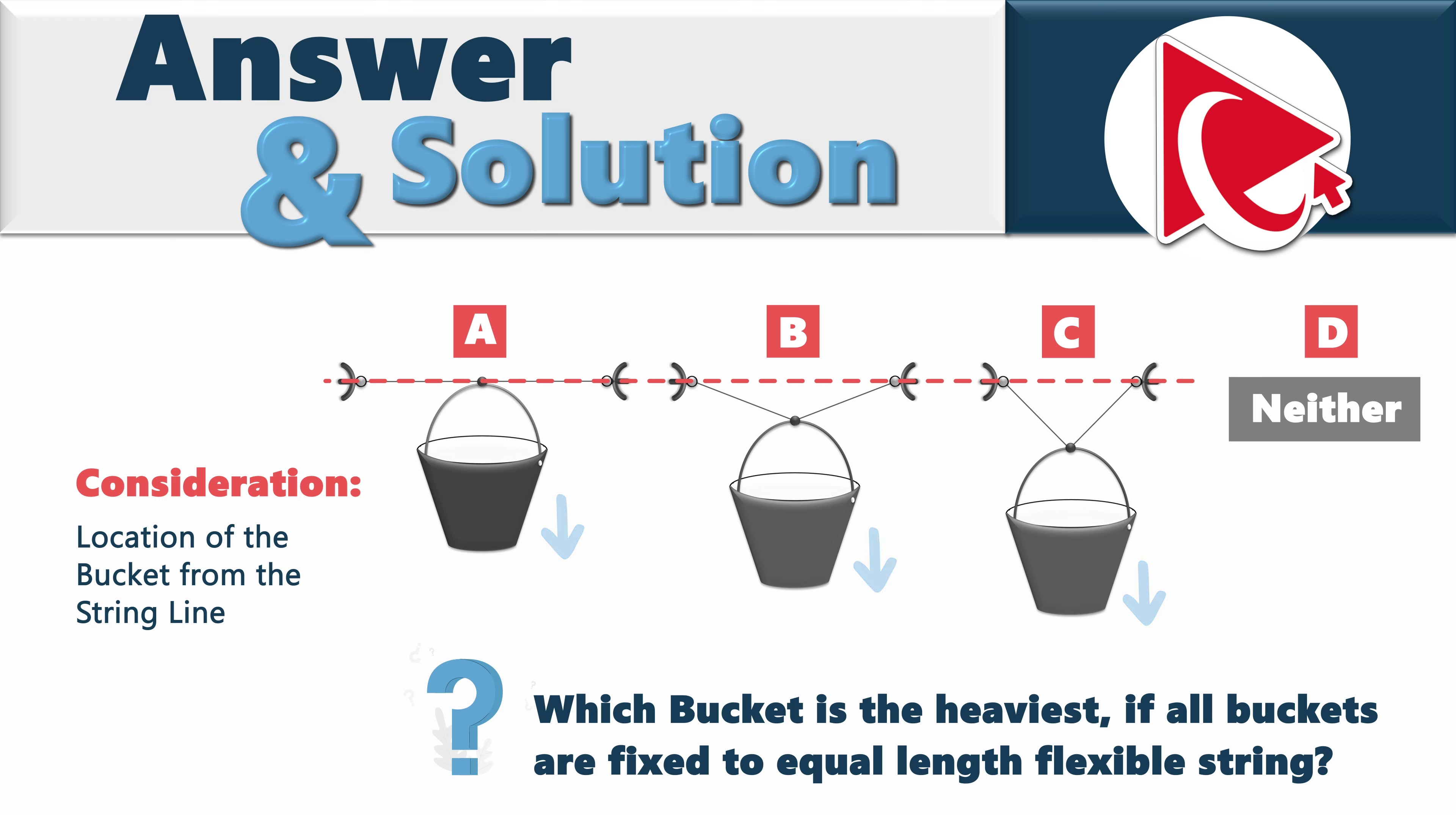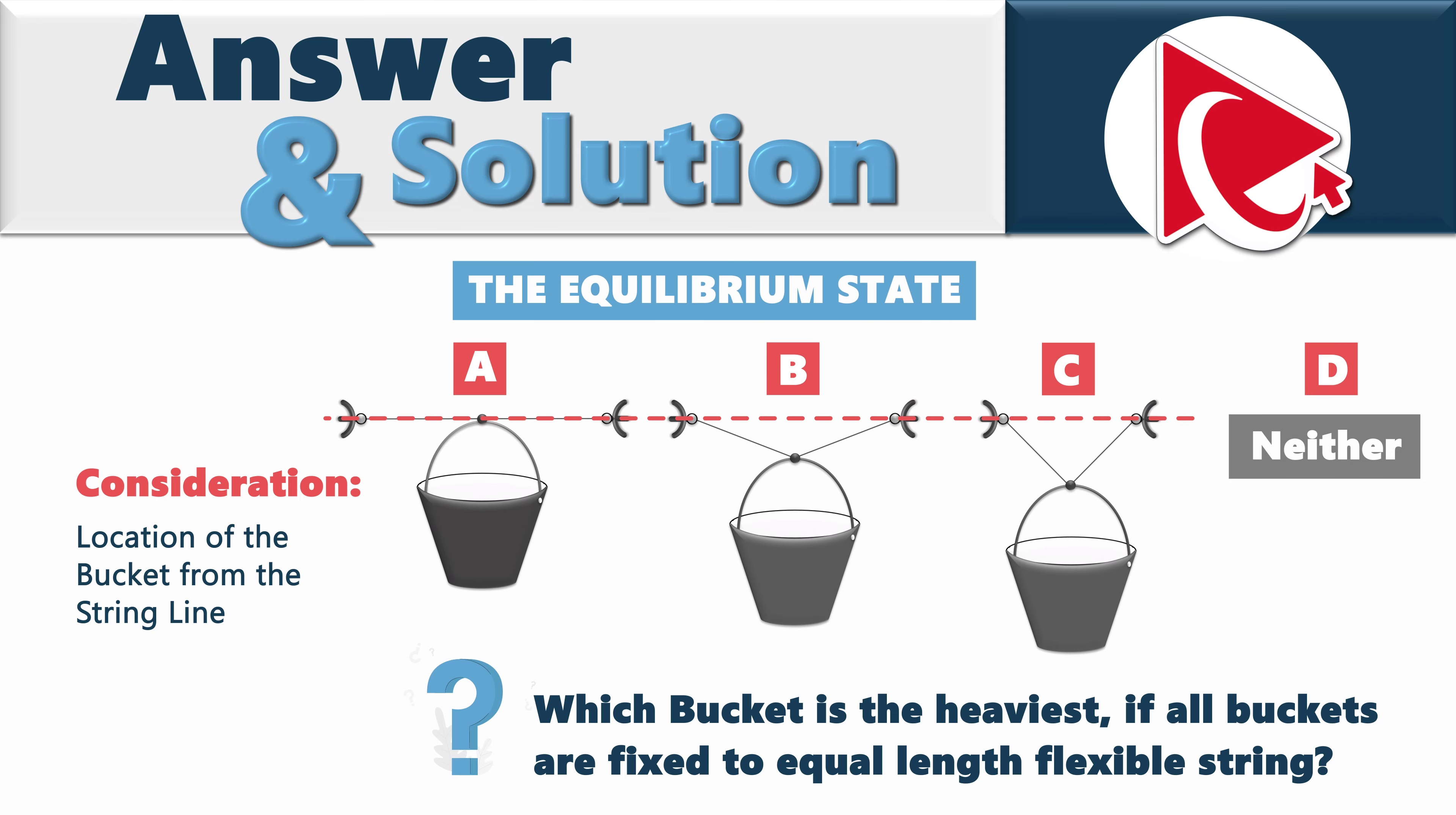What does it tell us? What we know from physics is that when multiple objects are suspended from the flexible string, they will settle into the state of equilibrium. In the state of equilibrium, the tension in the string will be equal at all points along its length.